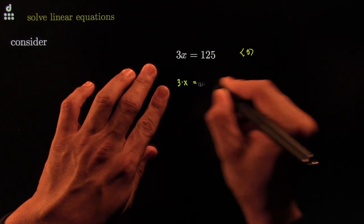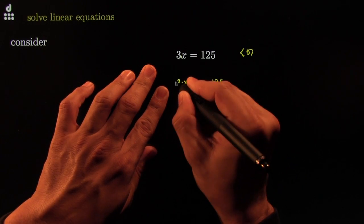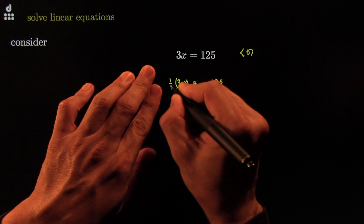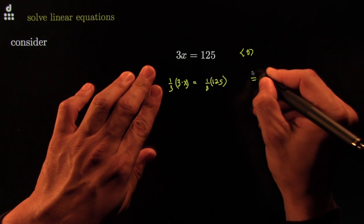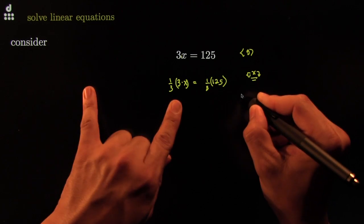So we would do 3 times x is equal to 125. And on this side, I would slap a 1 over 3. And on this side, I would slap a 1 over 3. That's called multiplying on both sides, or cancellation law of multiplication.